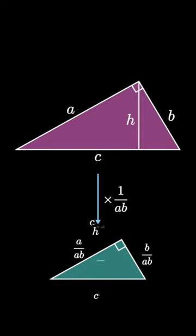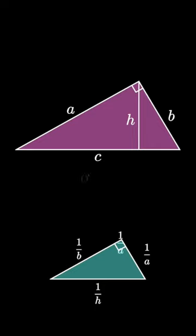And CH equals AB, so the hypotenuse is C divided by CH. Notice that the A's cancel in the first side length, the B's cancel in the second side length, and the C's cancel in the hypotenuse length. So this right triangle has side lengths 1 over B and 1 over A and a hypotenuse of length 1 over H.